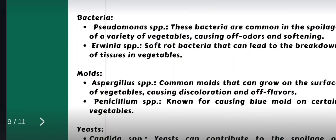Once a vegetable is infected by Pseudomonas species, it causes off-odor and softening of the outer layer, indicating that the vegetable is spoiled by microorganisms. Similarly, Erwinia species causes soft rot disease and breaks down tissue in vegetables. Moving on to fungi, Aspergillus species commonly infects and grows on the surface of vegetables, causing discoloration and off-flavor.